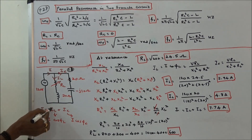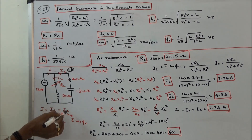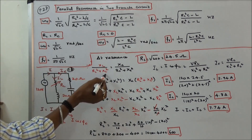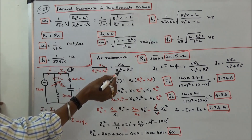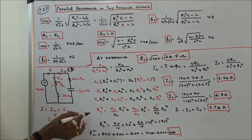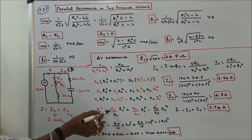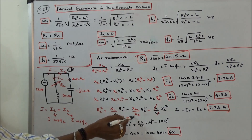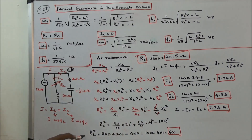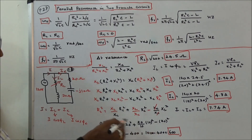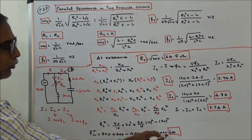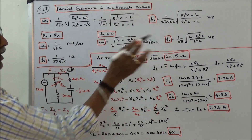At resonance, I = phase component of I_L + phase component of I_C, and the condition X_L / (R_L² + X_L²) = X_C / (R_C² + X_C²) applies. Simplifying the equation: R_L² = (X_L / X_C)·R_C² + (X_L / X_C)·X_C² − X_L². Substituting all known values, R_L² gives R_L = 24.5 ohms.